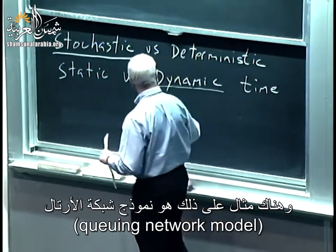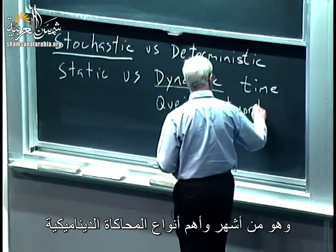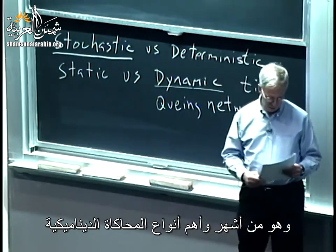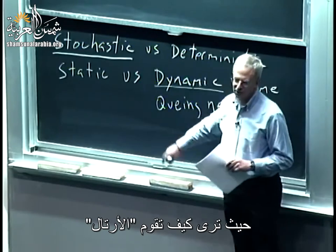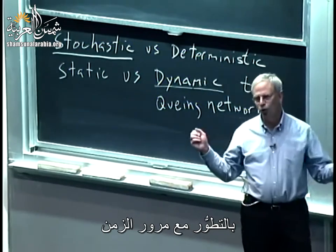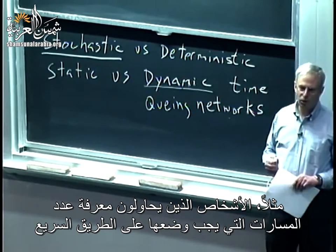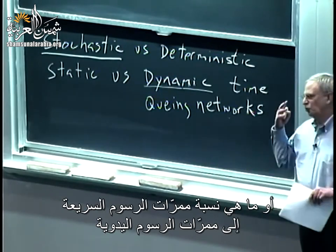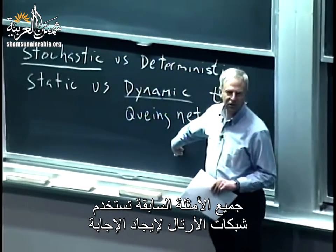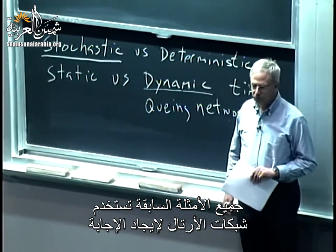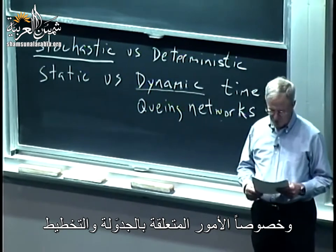An example is a queuing network model. This is one of the most popular and important kinds of dynamic simulations, where you try and look at how queues — a fancy word for lines — evolve over time. For example, people deciding how many lanes should be in a highway, how far apart exits should be, or what the ratio of fast lane tolls to manually staffed tolls should be — all use queuing networks. These are very important for scheduling and planning.